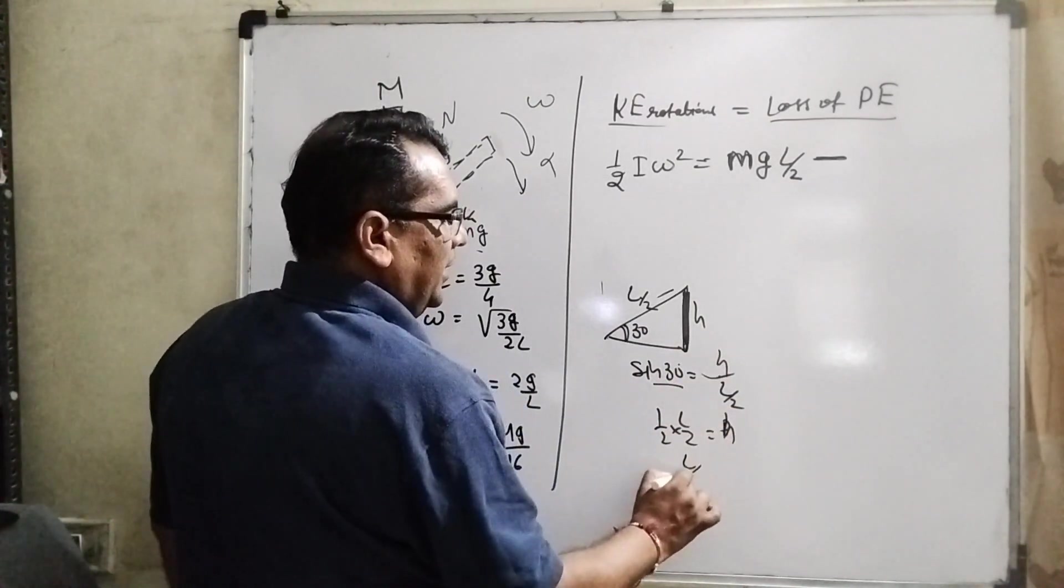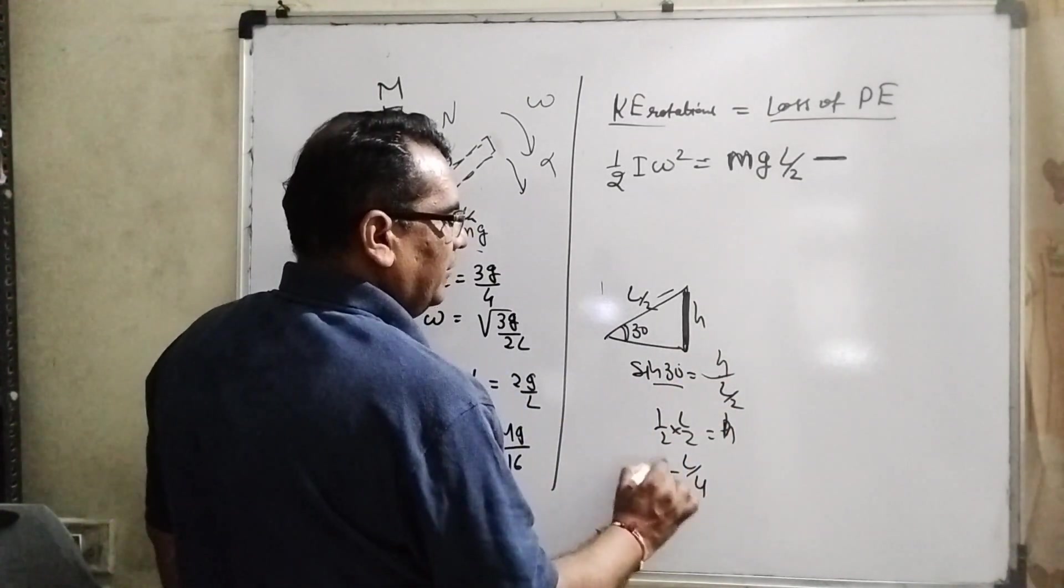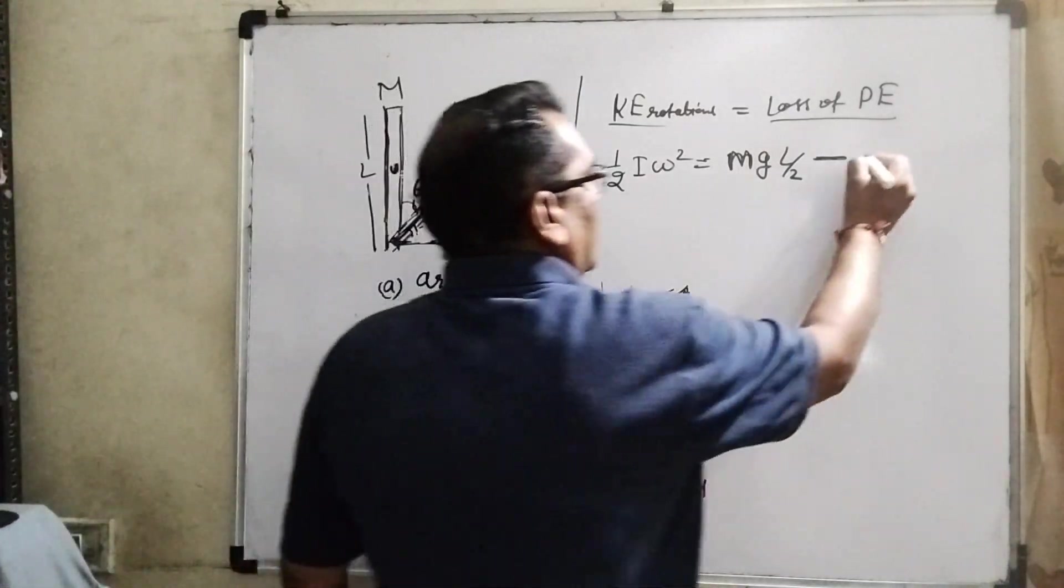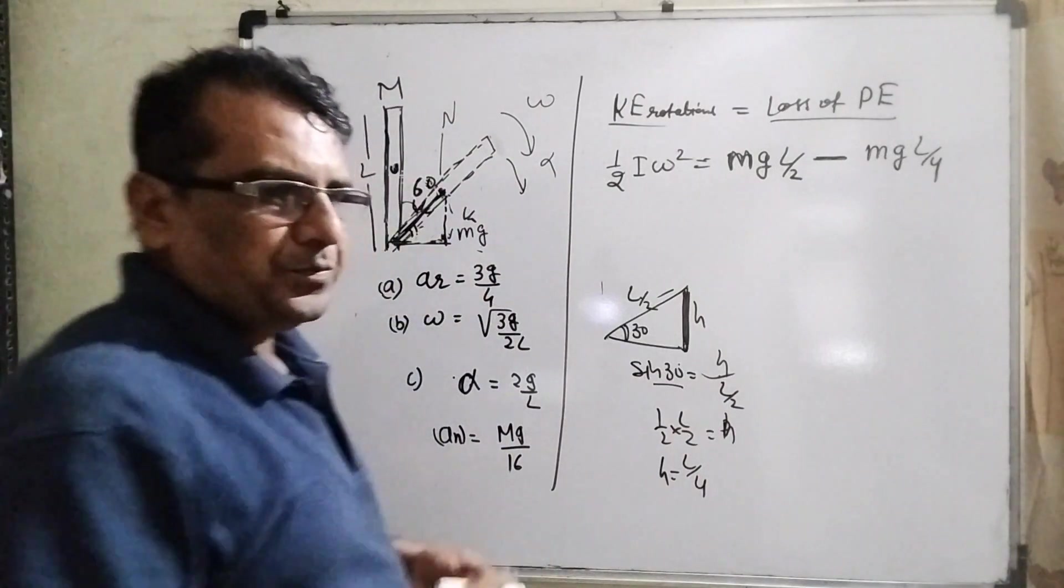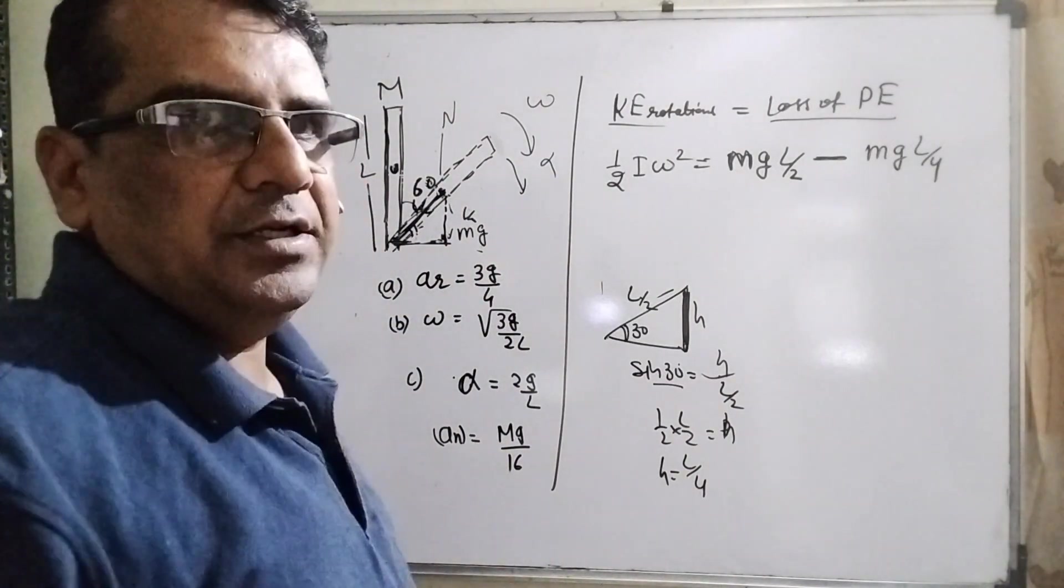Sine 30 is 1 by 2 and L by 2. Then p means height. Then it becomes L by 4 equal to h. So now M g L by 4, this is the loss of kinetic energy.